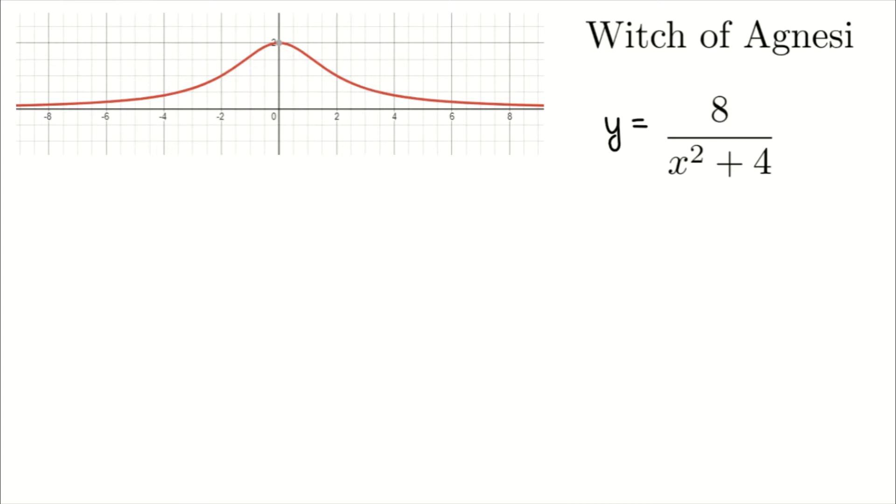So y equals 8 over x squared plus 4. That's the function it's modeled after. So the quotient: 8 is being divided by x squared plus 4. Let's just write that down once to make the point.